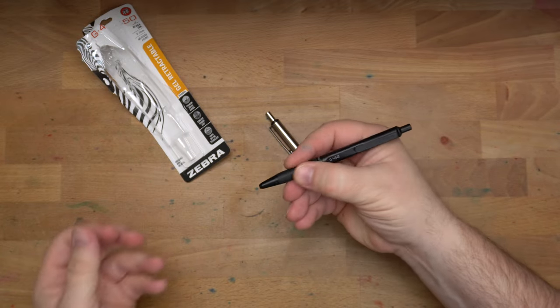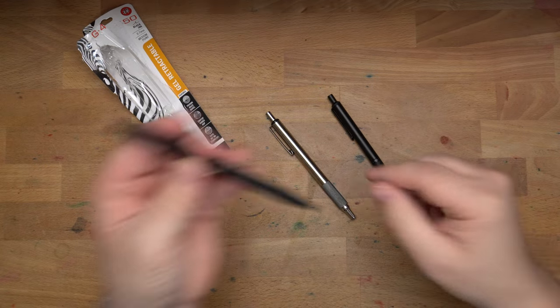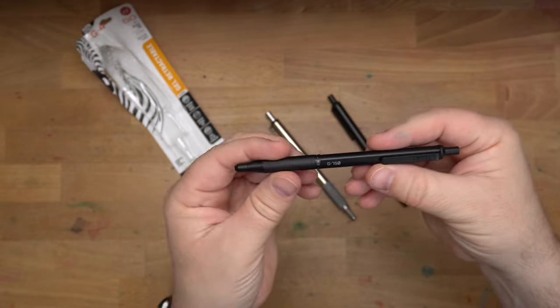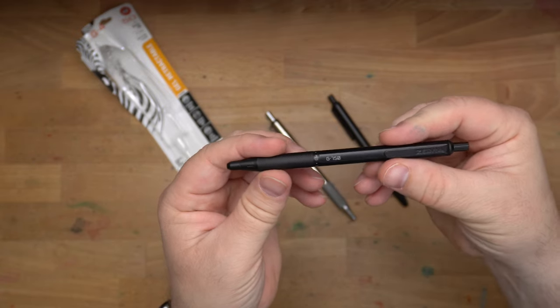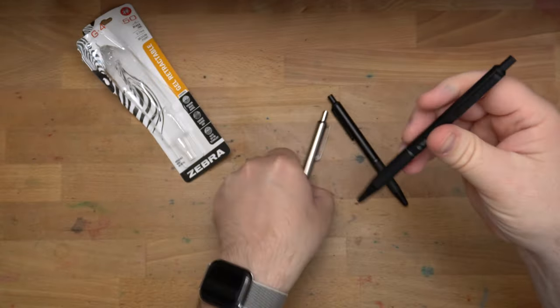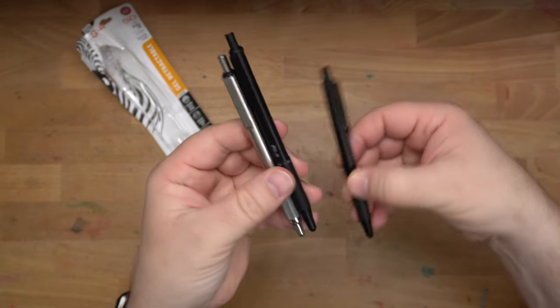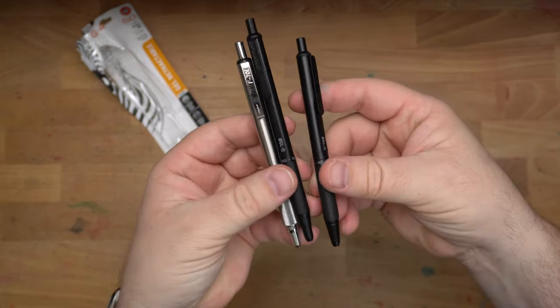But this grip I think feels really nice as well. And then on the upper end, a little bit more expensive than this one is the G750, which is kind of bigger all around, and again has that same knurled grip as the 701 as opposed to the 450's rubbery grip.